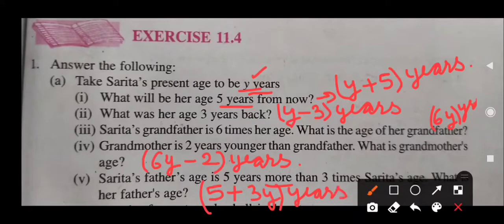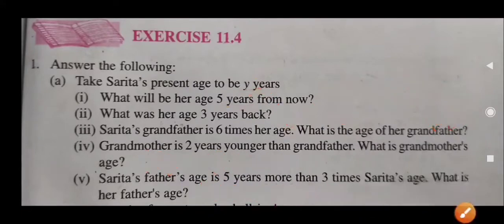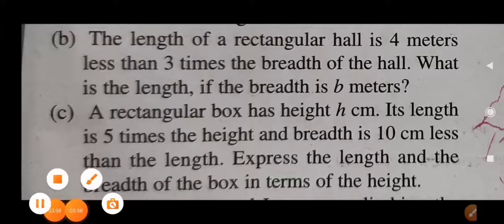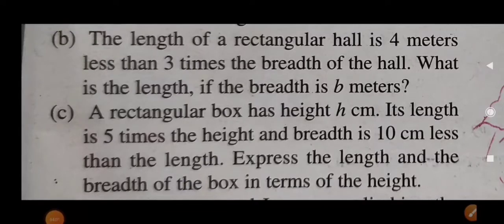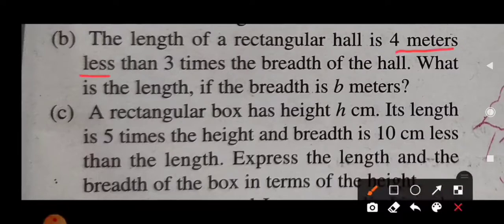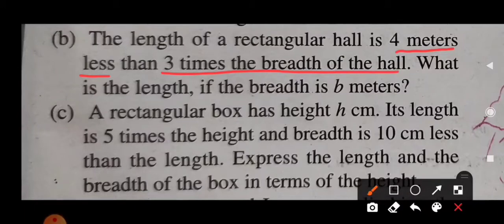You have to write down years with each and every answer. So this was all about question number 1. Now let's read the B part of question number 1. It says the length of a rectangular hall is 4 meters less than 3 times the breadth. So 3 times of breadth gives 3B, and 4 meters less means we subtract 4. So the length is 3B minus 4 meters.